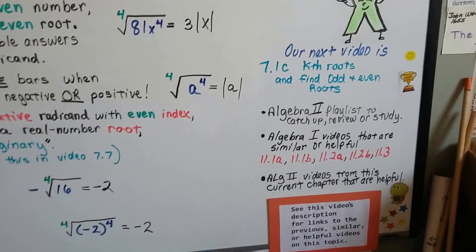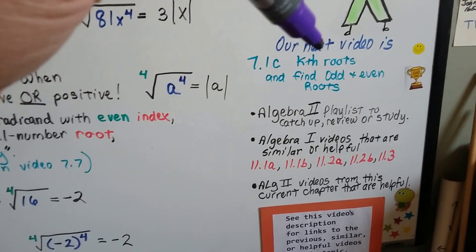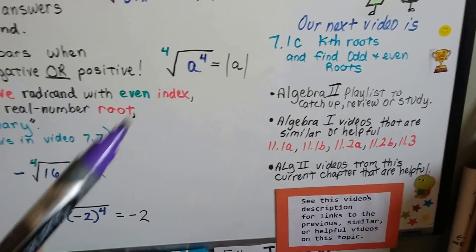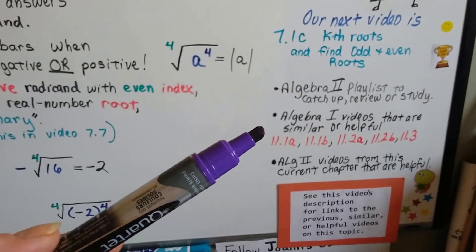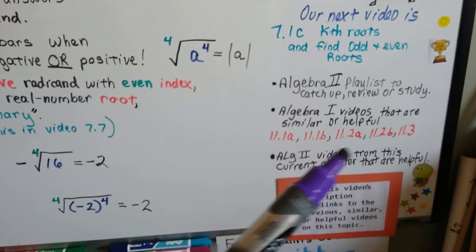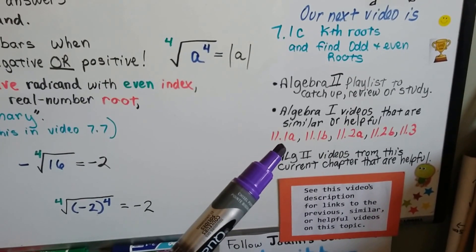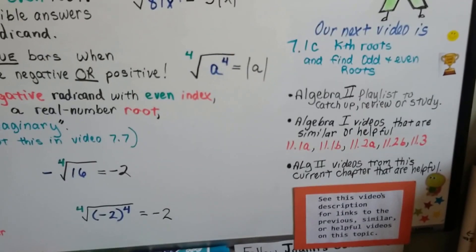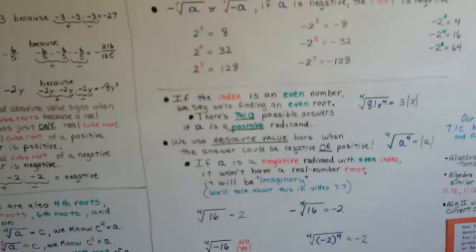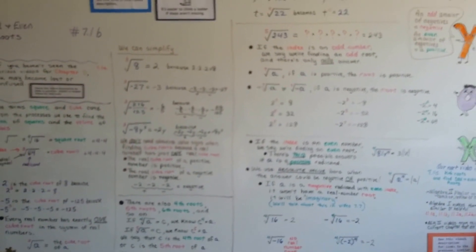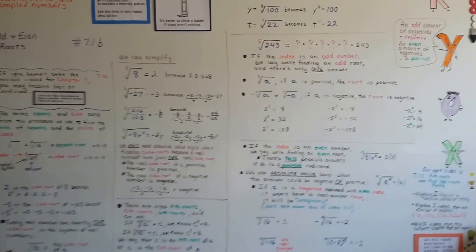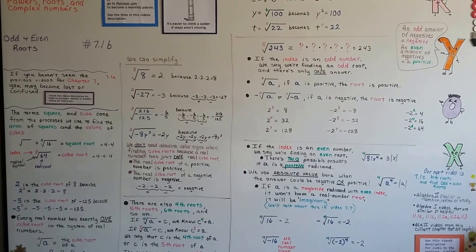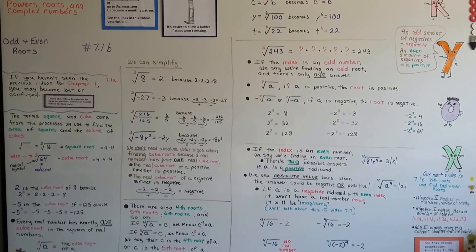It's really important you watch the next video because it's closely linked to this one — we're going to talk about kth roots and find odd and even roots. I'm going to add this video to the Algebra 2 playlist. If you want to watch some Algebra 1 videos that are similar, there will be links in this video's description to 11.1a, 11.1b, 11.2a, 11.2b, and 11.3, plus a link to 7.1a. I hope I explained this well — this is a really tricky topic. Watch the video before and after this if you're really confused. I'll see you next time. Bye.